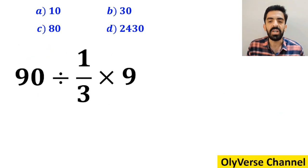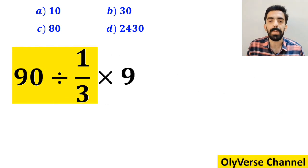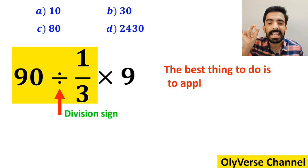So first we start with the expression 90 divided by 1 over 3. Okay, whenever we come across a division sign between two terms, the best thing to do is to apply the KCF rule.